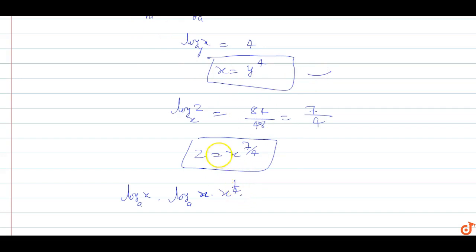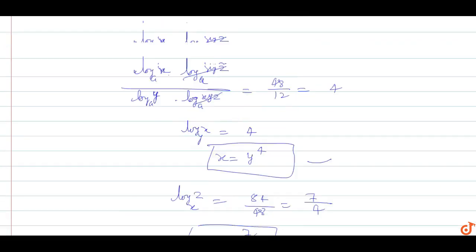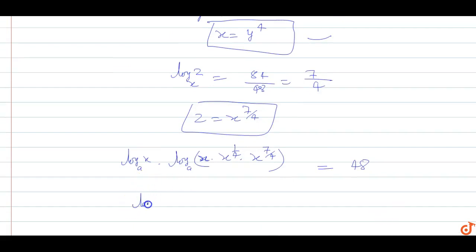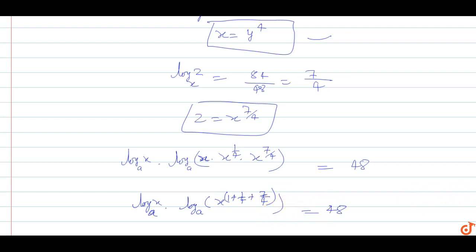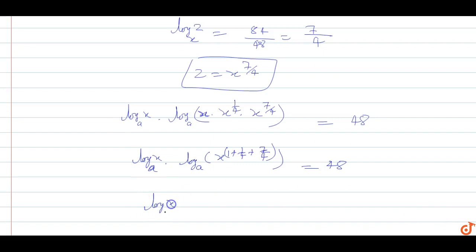Expressing everything in terms of x: z equals x to the power 7 by 4, and this equals 48. Substituting into equation 1, we get log x base a times log base a of x to the power 1 plus 1 by 4 plus 7 by 4, which equals 48. This simplifies to log x base a times x to the power 3, so 3 times log x base a squared equals 48.